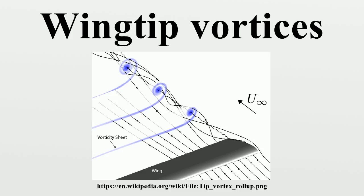The cores of the vortices are sometimes visible because water present in them condenses from gas to liquid, and sometimes even freezes, forming ice particles. Condensation of water vapor in wingtip vortices is most common on aircraft flying at high angles of attack, such as fighter aircraft in high-G maneuvers, or airliners taking off and landing on humid days.